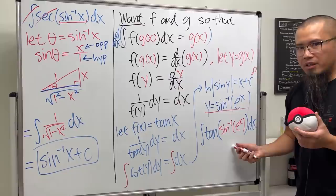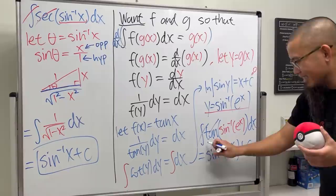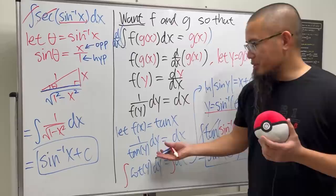This question can really scare a lot of calculus 2 students, but they wouldn't know that all you have to do is cancel and then we'll get the answer inverse sine of e to the x. And of course now don't forget the plus C.